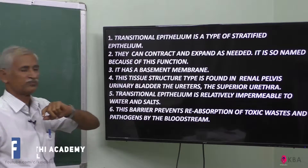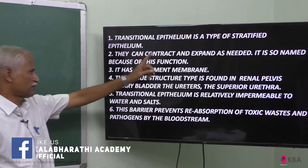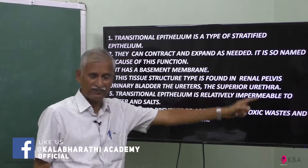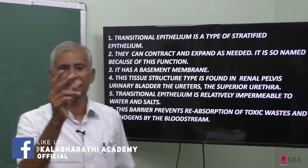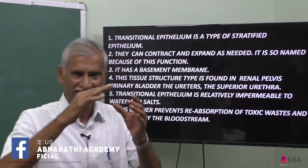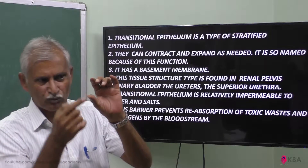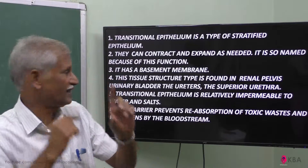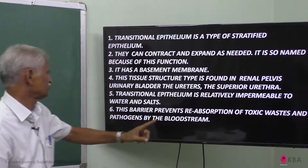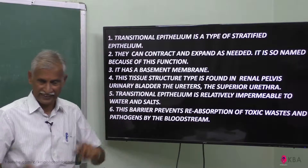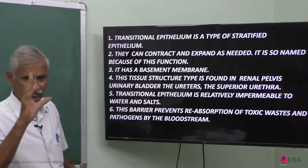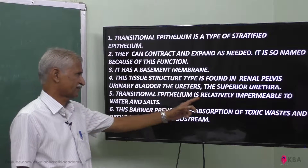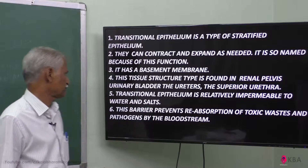Transitional epithelium. This structure is found in the renal pelvis, urinary bladder — so it can shrink and become big also. It is also found in the ureters and superior urethra.